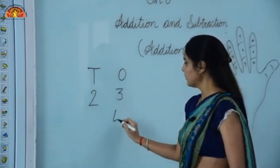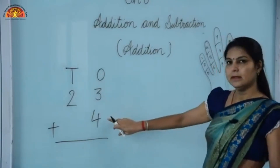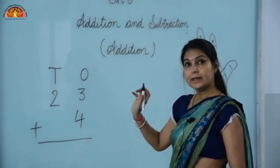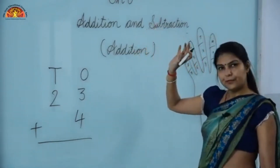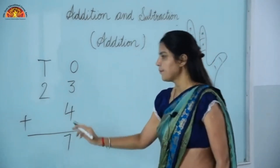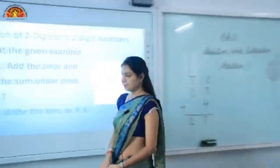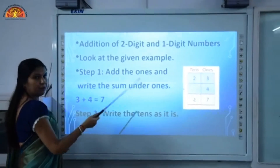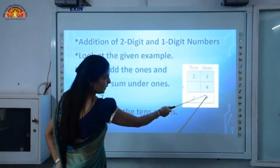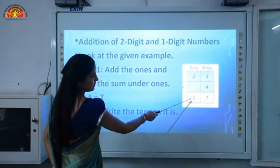We have 23 plus 4. We will keep the bigger number in our mind — four — and count forward three: five, six, and seven. So the sum of the ones digits is seven. There is no other number in the tens place to add, so we write two as it is. Step two: write the tens digit as it is. The answer is 27.